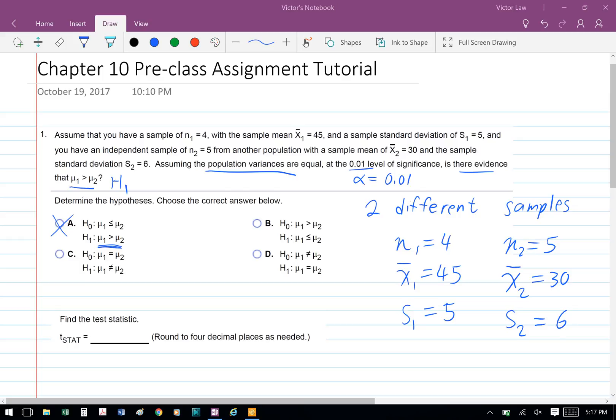In this question, we have two different samples with their respective sample size, mean, and standard deviations, and we're asked to see if there's any evidence that mu1 is greater than mu2. So that's our alternate hypothesis H1, and therefore our H0 is that mu1 is less than or equal to mu2, so the answer is A.